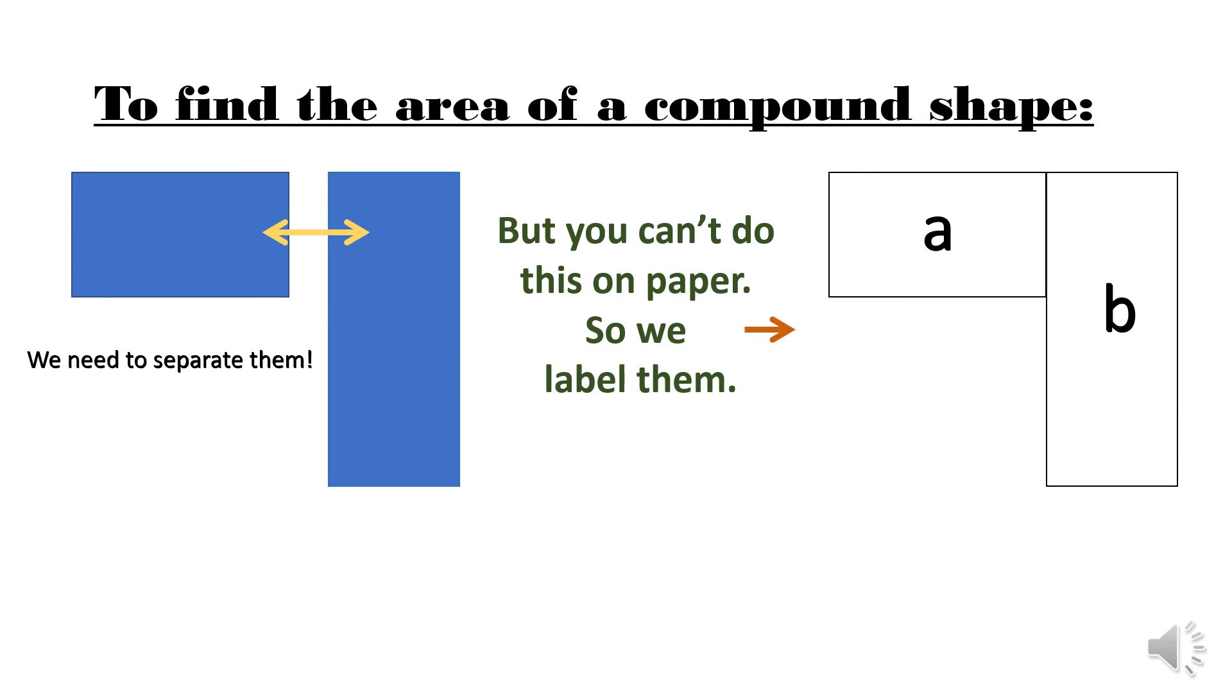Now, how do we find the area of a compound shape? There's a few steps and I'm going to show you them. The first thing we need to do is segregate them. We need to separate these shapes. So here I've split them. You can see the two blue shapes have been now pulled apart. But of course, you can't do this on paper, can you? So we've got to think of a way to split them so your brain can think about how to work out the area. What do we do? We're going to label them. So instead of splitting the A and B, we just write in A and B. That's nice and easy.